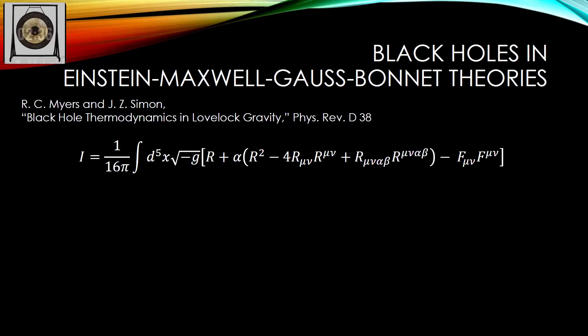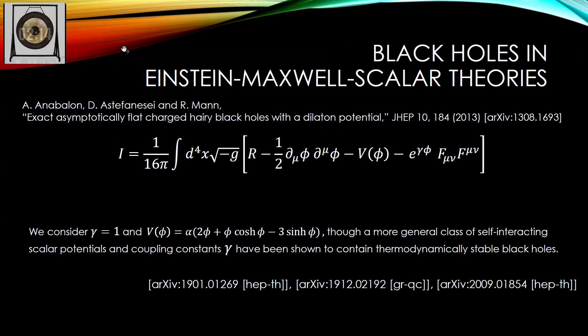I present two scenarios where this actually happens. The first is in Einstein-Maxwell-Gauss-Bonnet theories: the corresponding black hole solutions are well known, and thermodynamically stable configurations arise when the coupling constant to the Gauss-Bonnet term alpha takes positive values. The second is in Einstein-Maxwell-scalar theories, provided the scalar field has a certain class of self-interactions — there is a whole family of scalar field potentials originating from supergravity models supporting exact black hole solutions that contain thermodynamically stable configurations.